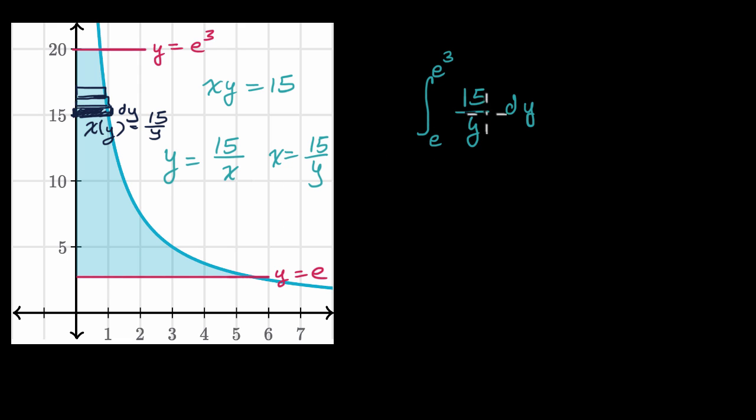So all we did—we're used to seeing things like this where it would be 15/x dx. All we're doing here is 15/y dy. Let's evaluate this. We take the antiderivative of 15/y and then evaluate at these two points.